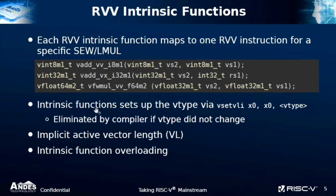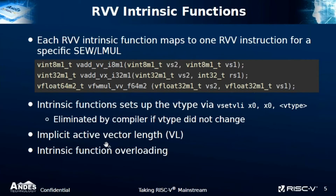Each of these intrinsic functions will emit a vsetvl instruction. This vsetvl will only change the vtype without changing the current vl. The compiler can eliminate this extra vsetvl if the vtype does not change between two intrinsic calls. We also have a design choice to make the vector length implicit, so you don't have to pass the vector length around as an argument. These functions will just use whatever vl you have set previously with a vsetvl intrinsic function call.